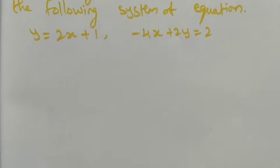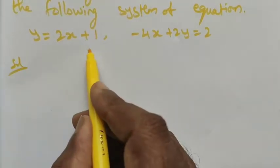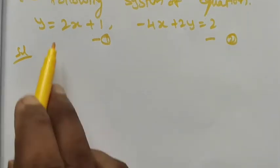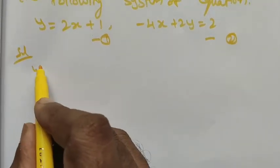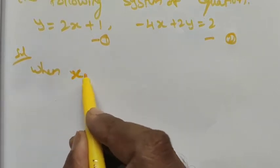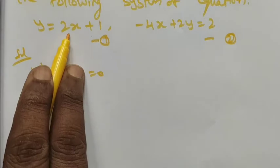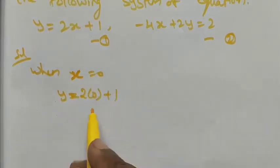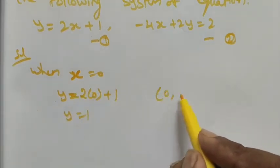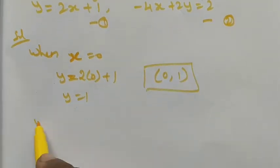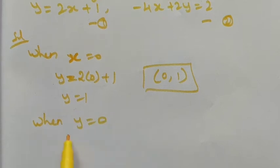First, we choose the equations one by one. Let me label the first as equation number 1 and the second as equation number 2. For equation 1, when x is equal to 0, substituting: y equals 2 into 0 plus 1, the x term becomes 0, so y is equal to 1. The ordered pair is (0, 1).